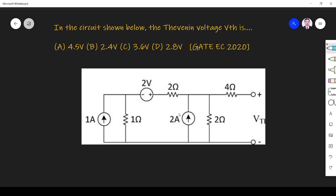Hi friends, in this video let us solve a network theory related question asked in GATE 2020 C-paper. The question is in the circuit shown below the Thevenin voltage Vth is. So what we have to find is Vth.